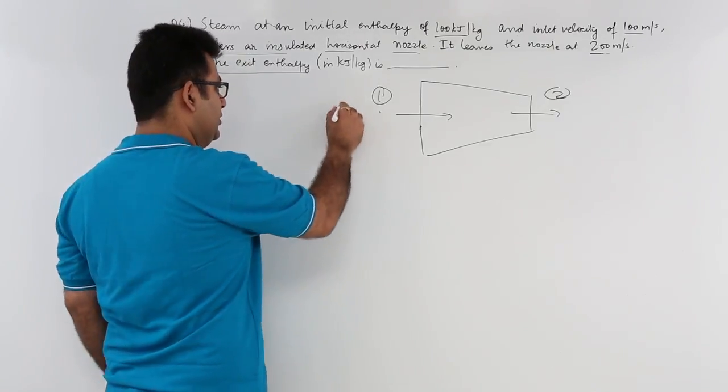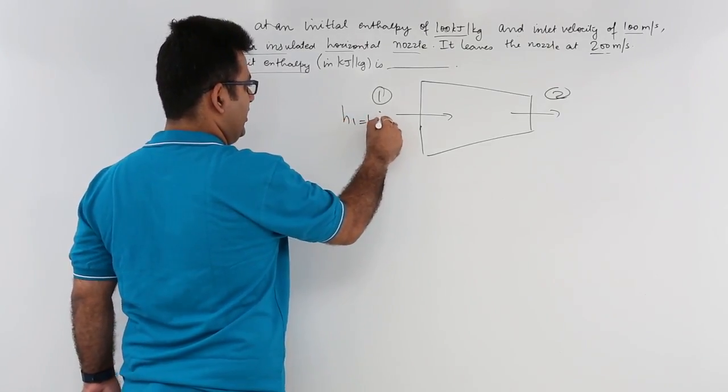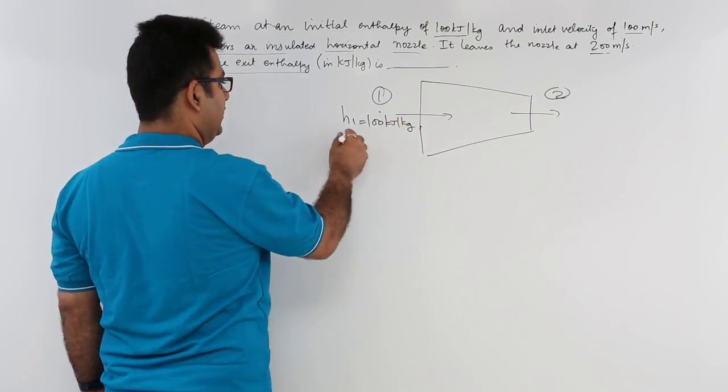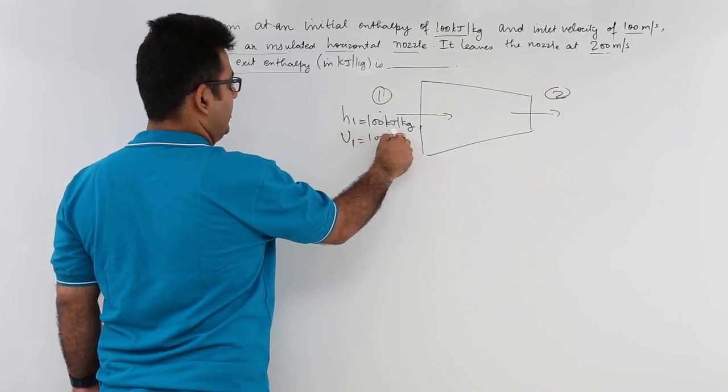Let us say entry and then exit state 1 state 2. At state 1, enthalpy is 100 kilojoule per kg. Velocity 1 is 100 meter per second.